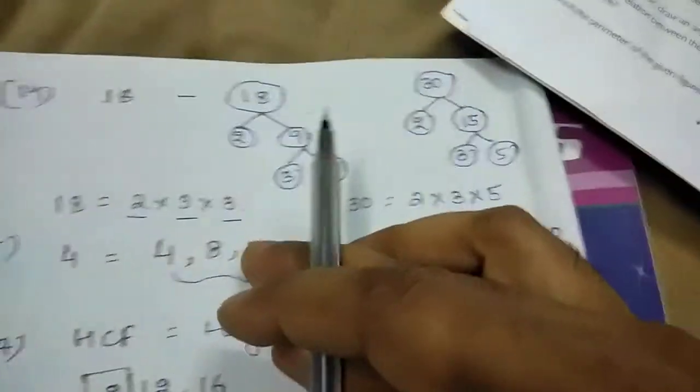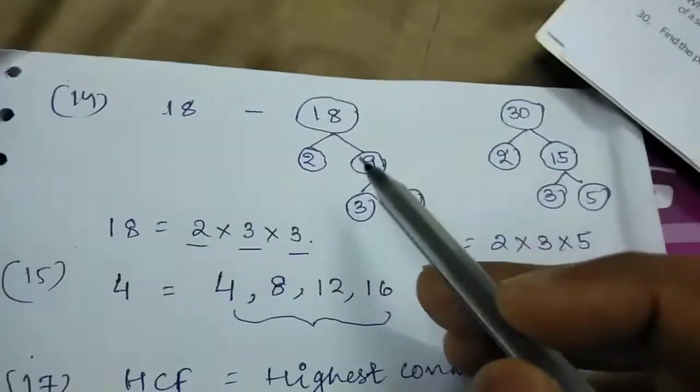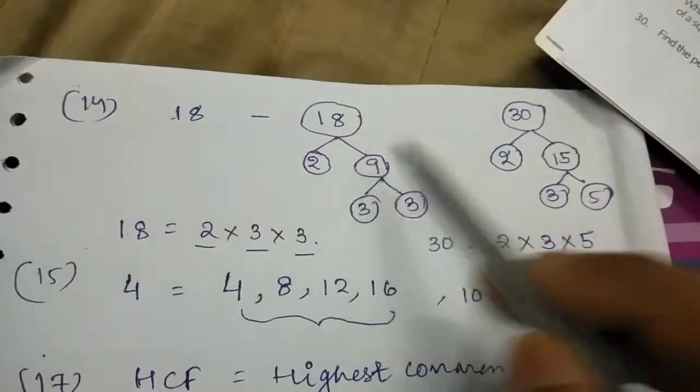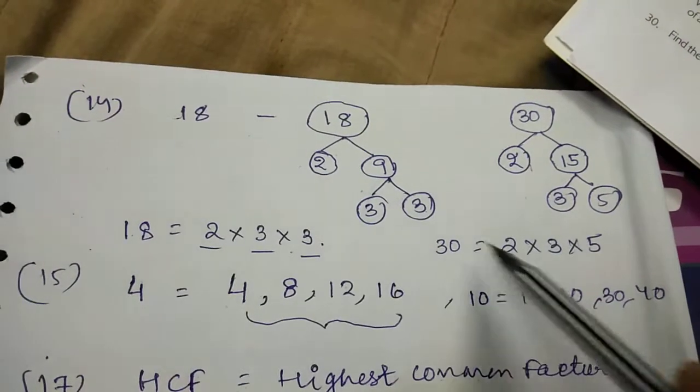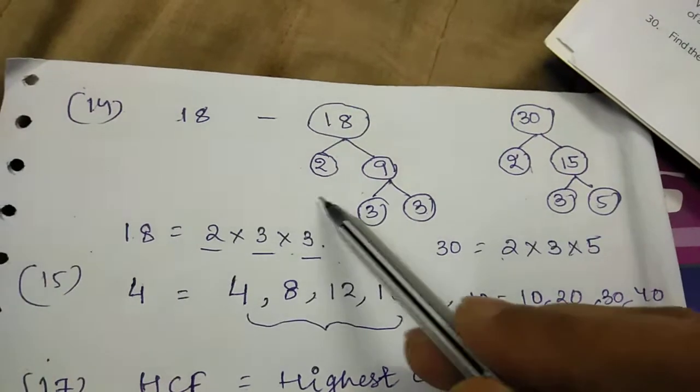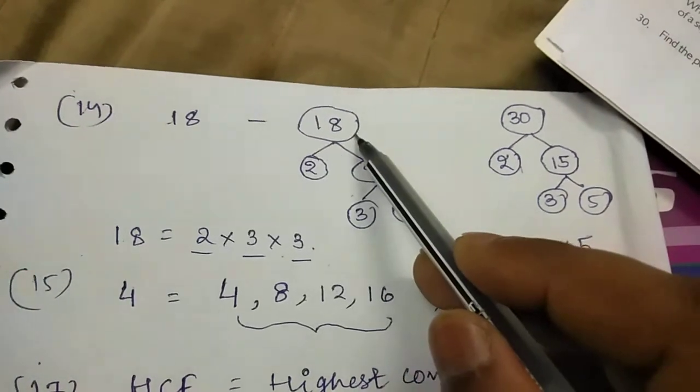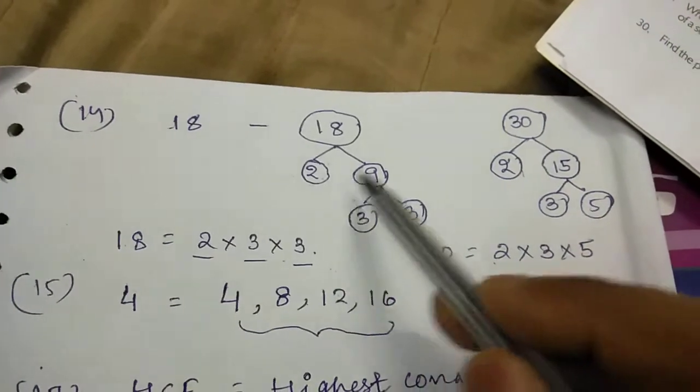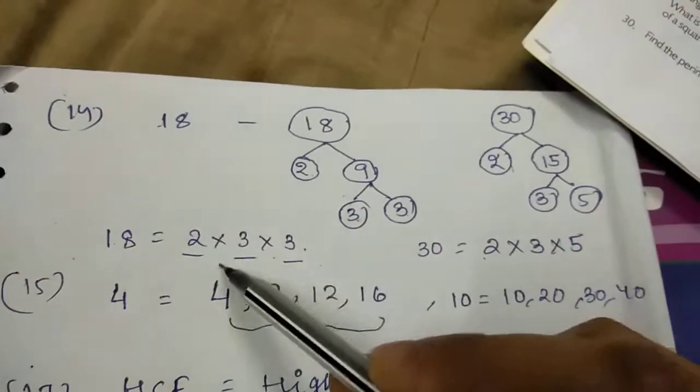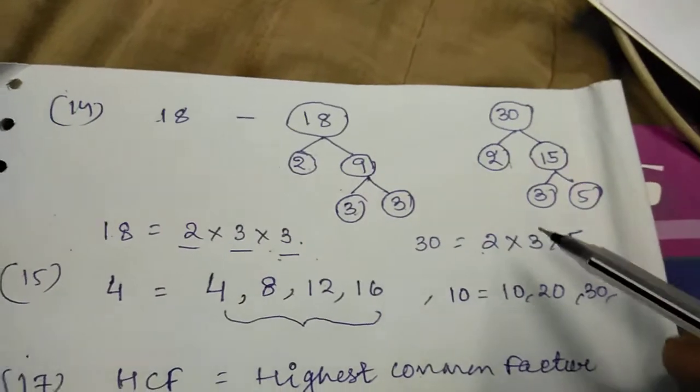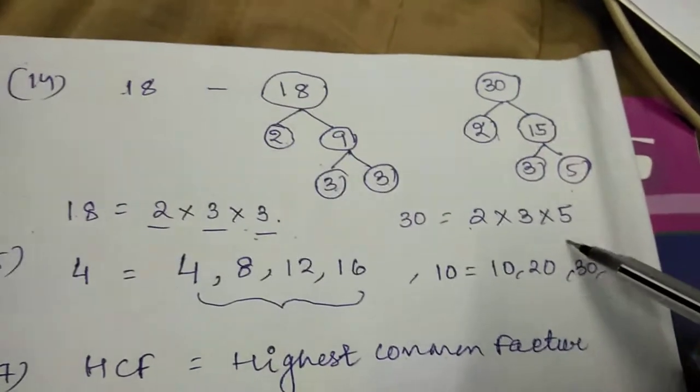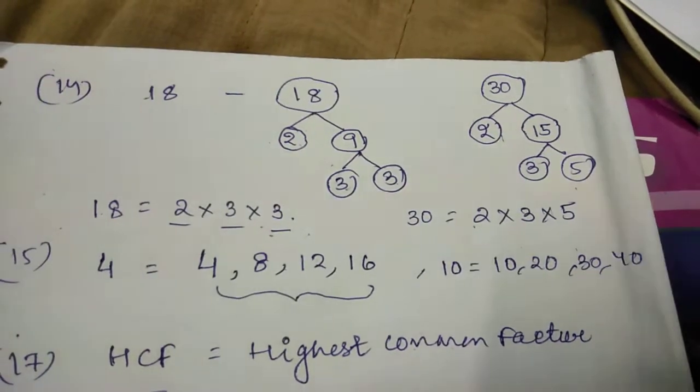Write down the factors of 18. We have known that factors of 18, this is a tree method, and this is the listing of methods. We will do the factor, finding out the factors by two methods. So 18 divide by the least possible number 2 and we get 2 times 9. We divide by 2, then 15 and 3 and 5. These are the factors.